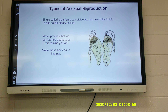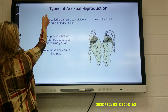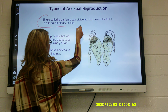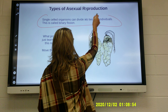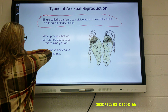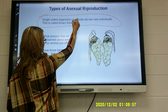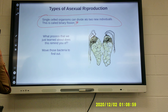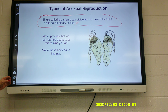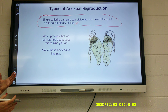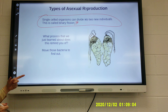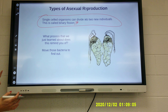Types of asexual reproduction: single-cell organisms can divide into two. This is called binary fission — it is literally just the splitting of that organism into two.